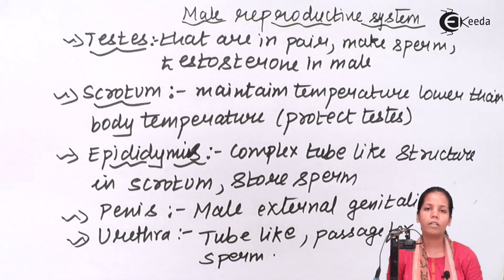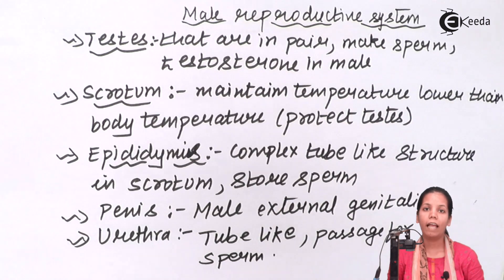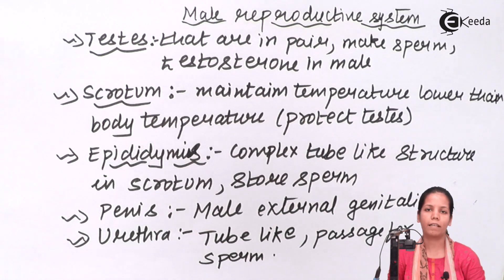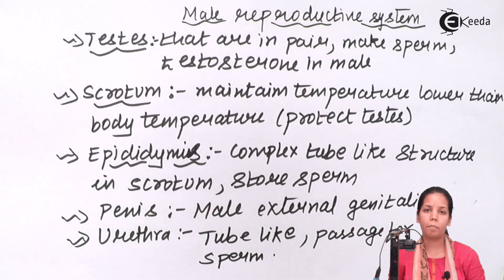During reproduction, the male parent gives 23 pairs of chromosomes to the child. These 23 pairs of chromosomes will have certain characteristics or genes which will be passed on to the child. All these parts have certain functions during reproduction.